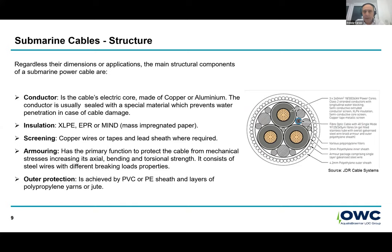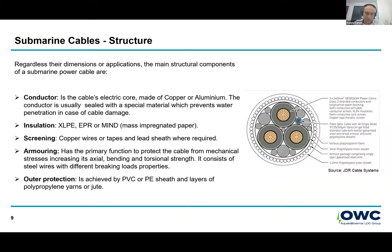The structure of a submarine cable — here we have an example of a three-core HVAC cross-section courtesy of JDR Cable Systems. We have the conductor, the electrical core, one of the most important elements of the cable itself, insulation layer, screening, armoring, and the outer protection. All of these layers have their own function, their own Young's modulus, their own mechanical properties, their strength, as well as their tensional limitations.